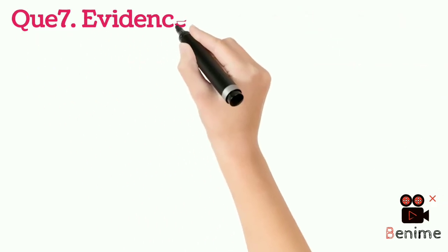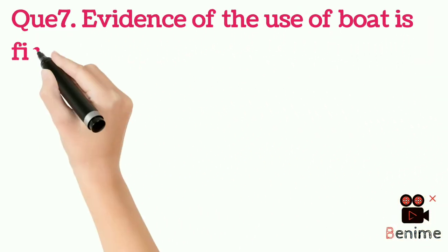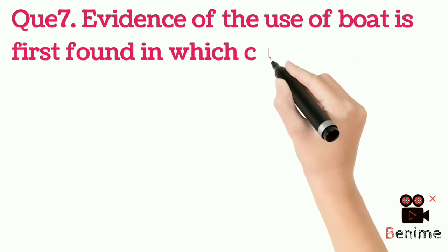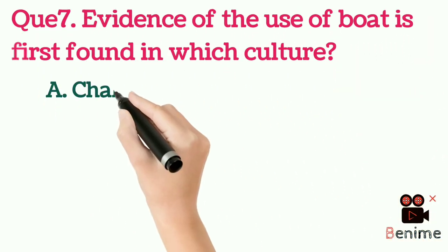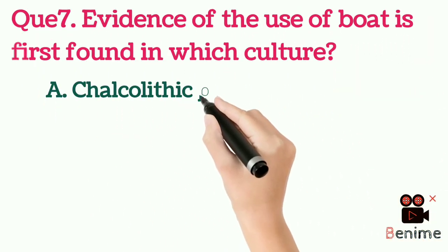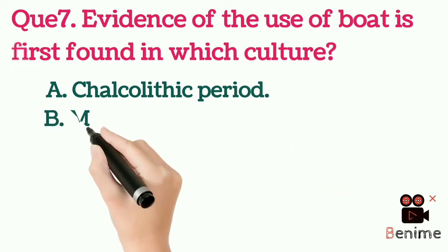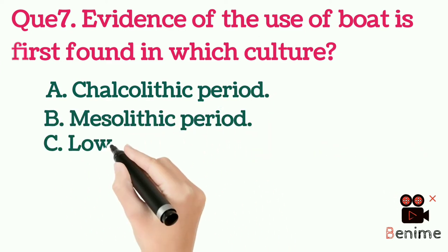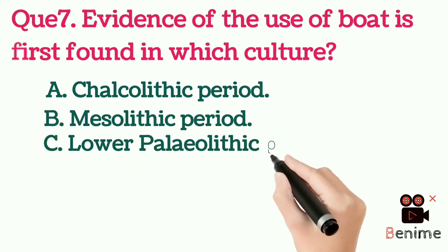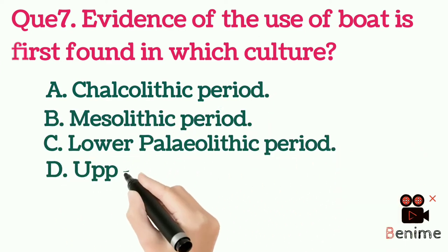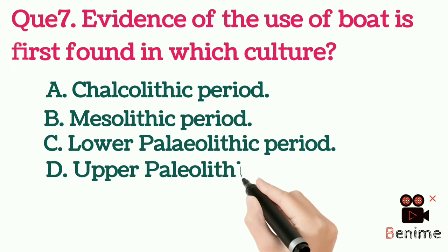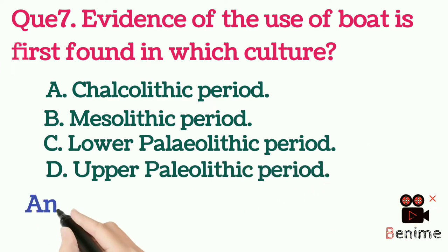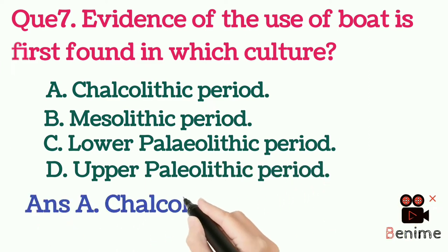Question 7: Evidence of the use of a boat is first found in which culture? A. Chalcolithic period. B. Mesolithic period. C. Lower Palaeolithic period. D. Upper Palaeolithic period. Answer A: Chalcolithic period.